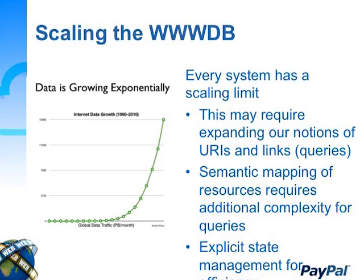Every system has a scaling limit. Nobody really knows what the web's scaling limit is, but we know it's out there. We may find it by finding the first resource that runs short — it may be that the thing we have the least of on www is good URIs, and that may be where scaling needs to start. The semantic mapping — RDF and so forth — is very complex and requires far more work in construction than most people will ever be willing to do. Explicit state management would make this a lot more efficient.